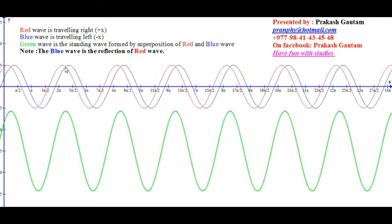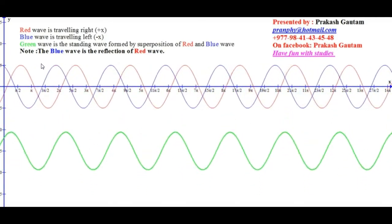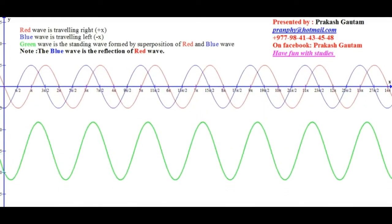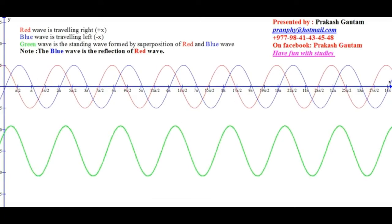See the red? The red is moving to the right. And the blue is a reflection, moving in the opposite direction. The green down below shows the resultant.